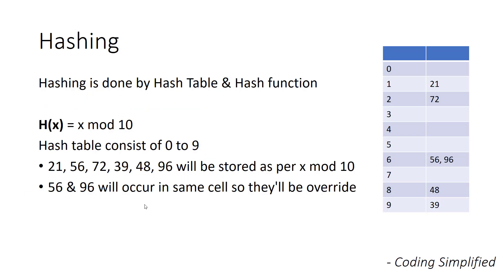Let me take an example of some values to show how it happens. Say we have these values: 21, 56, 72, 39, 40, and 96. Earlier, these values were simply stored in a list or array. Now we want to put these values through a hash function so that we can get faster results. So we would have two things: a hash function and a hash table. Let's say we have a hash table of size 10 (indices 0 to 9) and a hash function: x mod 10.